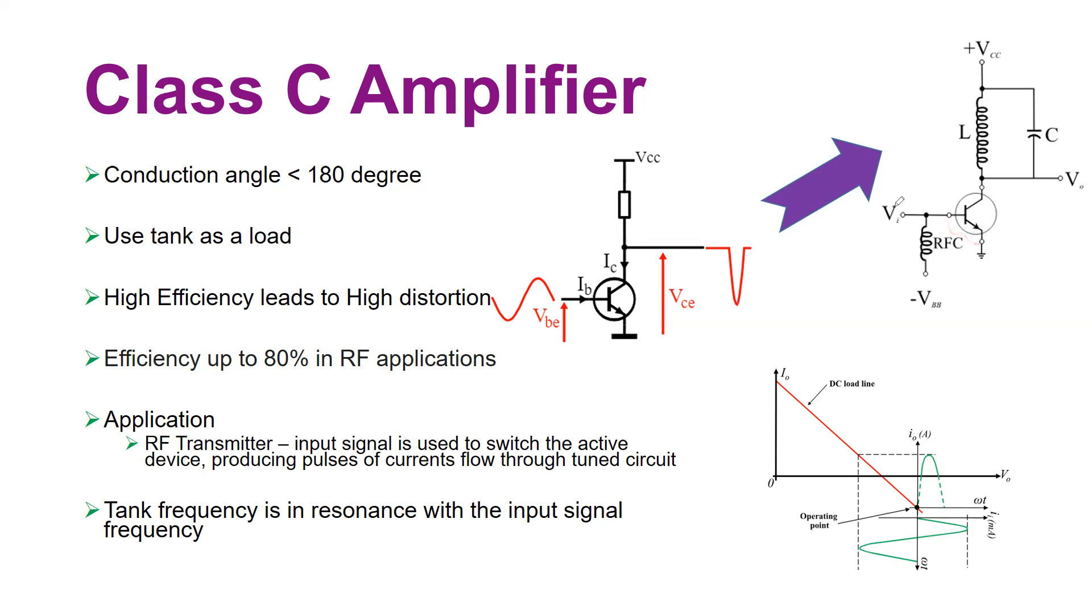VI is your sinusoidal input and VO is your amplified output. But the amplified output as I drew here in full sine wave is not correct. Rather, I would draw the short pulses as shown right here. We use a tank as a load, and the conduction angle is less than 180 degrees.